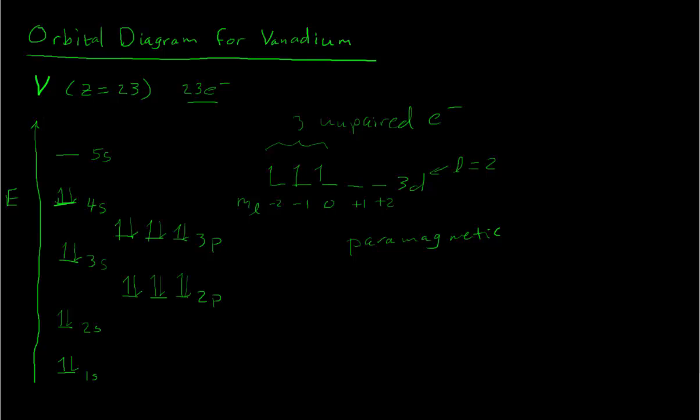We could translate this into an electron configuration, just writing down the number of electrons that's in each set of orbitals. So this would be 1s2, 2s2, 2p6, 3s2, 3p6, 4s2, 3d3.